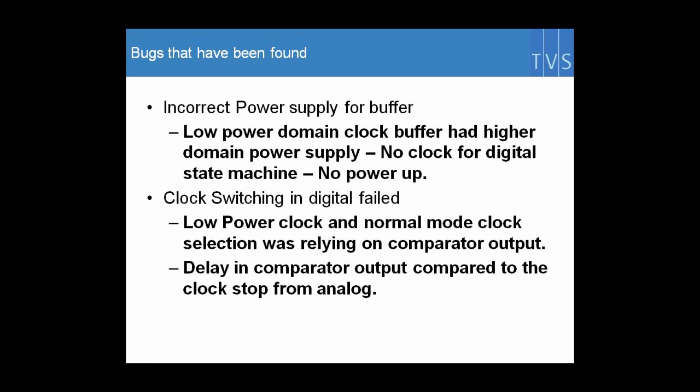Clock switching was happening in the digital while the comparator output was being driven from the analog block. When the main battery was removed and the clock was being stopped by the analog comparator output, there was not enough time for the digital to switch to the low power clock. So the design was getting stuck again. Both of these bugs were found quite early in the design phase.